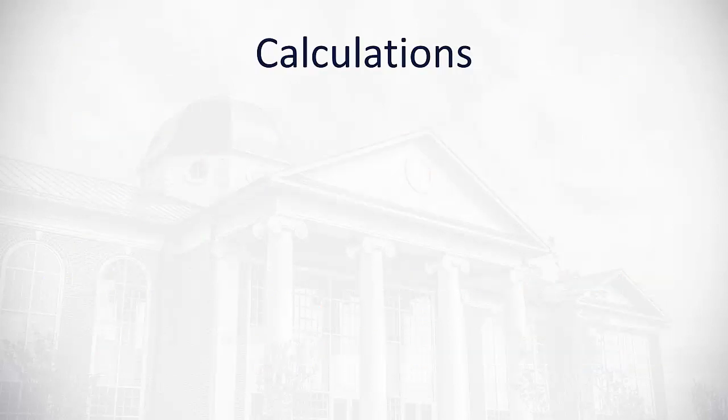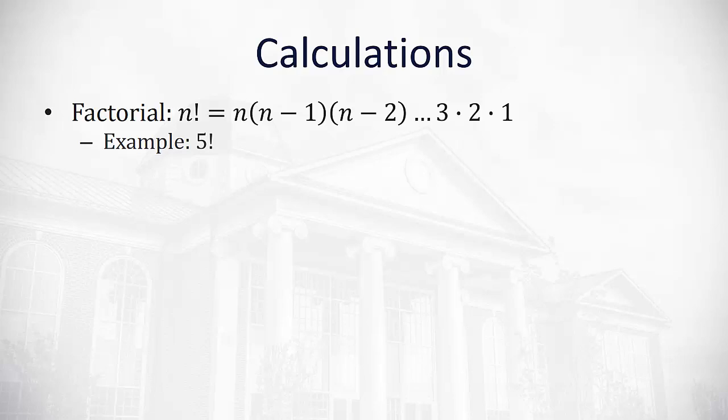Now to actually calculate the number of possibilities, we have some formulas. First, we need to understand this idea of a factorial. A factorial is the exclamation point, and that factorial means we're going to multiply by that number and everything below it. So, for example, 5 factorial means we're multiplying 5 times 4 times 3 times 2 times 1, everything below it, to get 120.